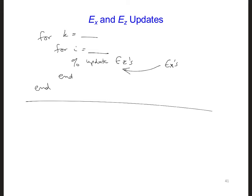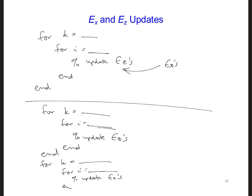Or should we instead separate them out for K equals something, for I equals something? We're going to update the EZs, and then we're going to close those loops, and then start some new loops for the EXs. So, here we're going to update the EXs, and then I'm going to close these loops.